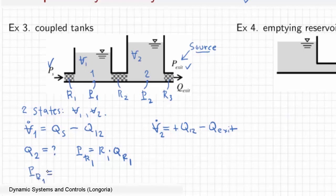But P_R1, what is that? Well, that's the difference across here. P_R1 is the pressure P_S minus P1. So this we know from the source, and P1 we would know because that's the pressure at the bottom of that tank. So it's going to be 1 over C1 times V1.